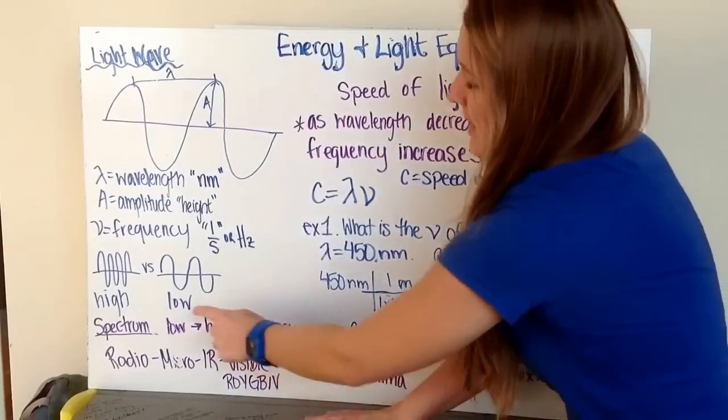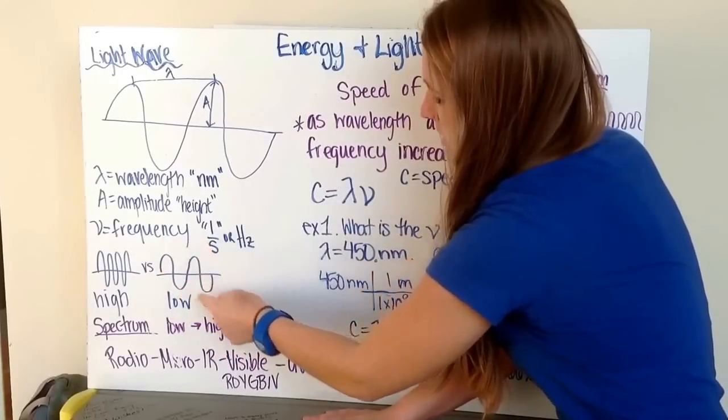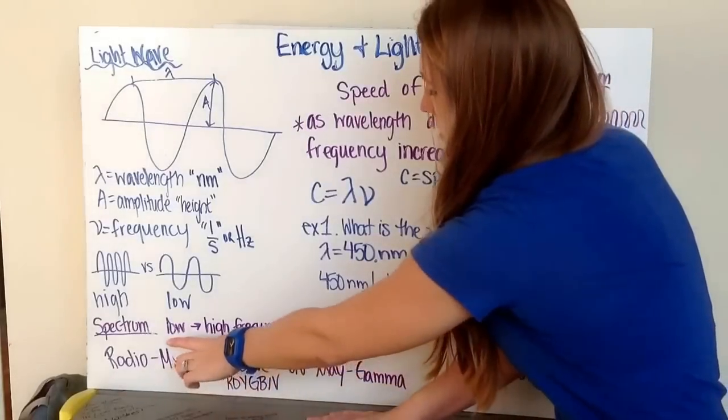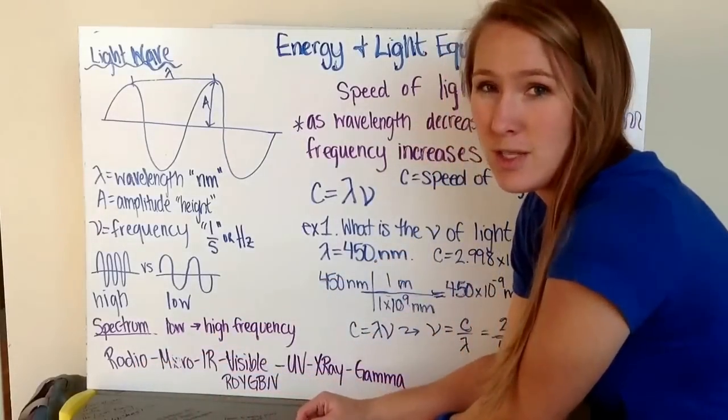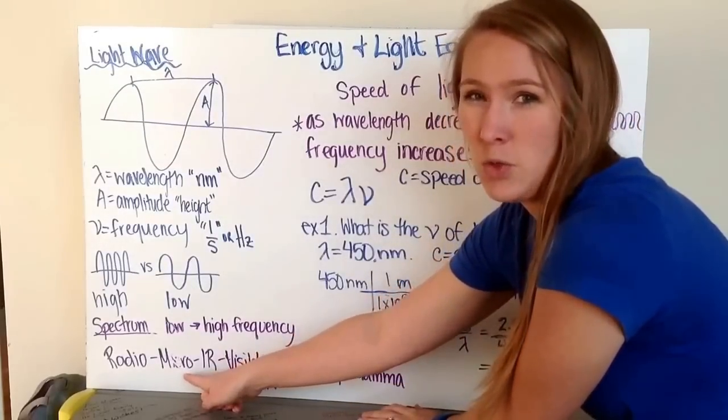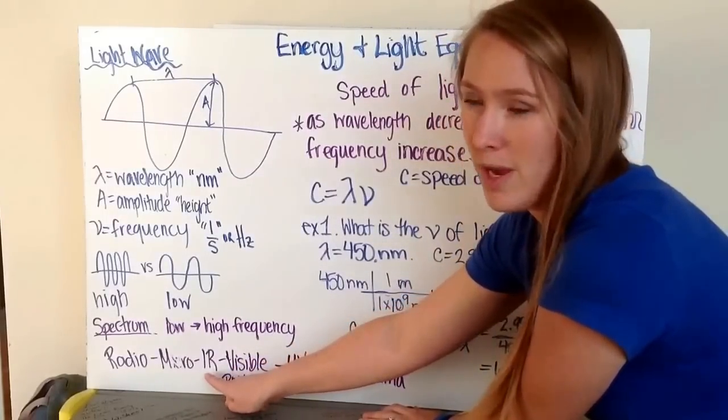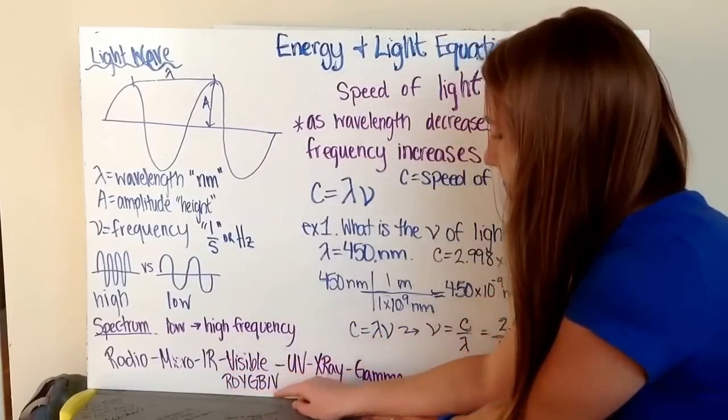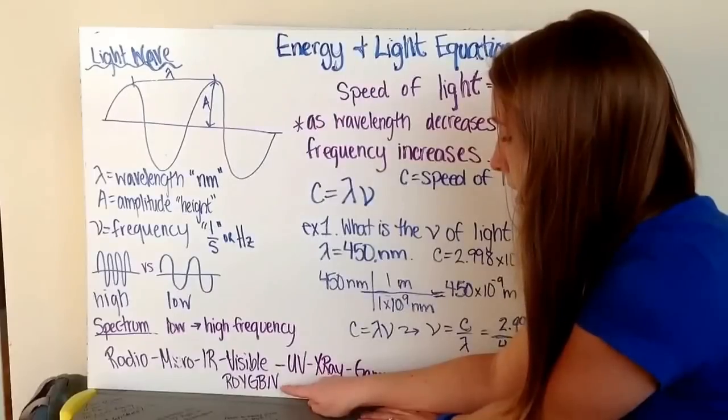We can have high frequency where we have many waves per unit of time, or a low frequency where we have fewer waves per unit of time. We have a light spectrum that goes from low frequency to high frequency. Radio waves are your longest wavelength. Microwaves are the waves that you use in a microwave to cook your food. IR stands for infrared. Then we have our visible region, which goes from red with the lowest frequency to violet with the highest frequency.